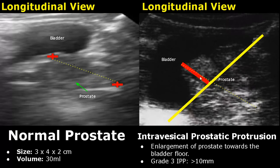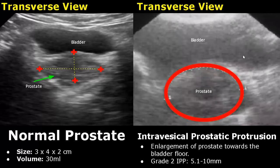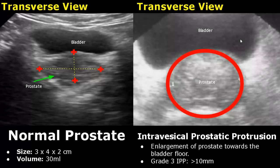Here we can see a very large prostate where the IPP is greater than 10 mm. This image is in transverse view — here is the bladder and this is the prostate. Grade 1 protrusion is very subtle, less than 5 mm. Moving on to grade 2 IPP, you can see a larger prostate gland. And finally, a grade 3 IPP — the protrusion is very large, greater than 10 mm.